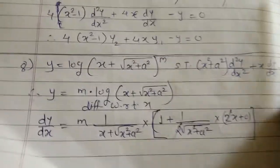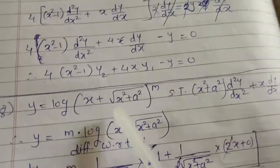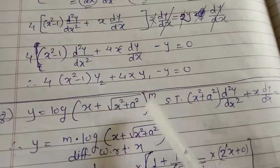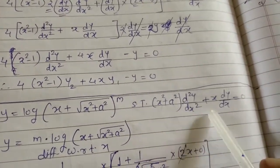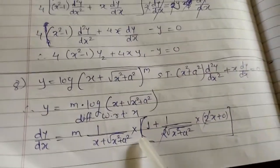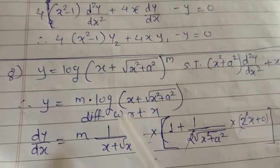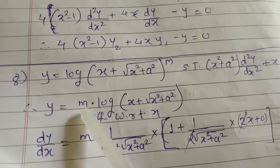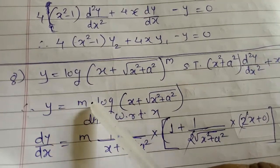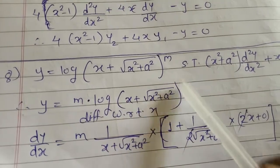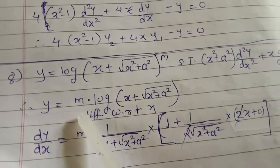Now for example number 8, question number 3: y = [log(x + √(x²+a²))]^m. Show that (x²+a²)·d²y/dx² + x·dy/dx = 0. Since these are somewhat lengthy examples, follow carefully. First, bring the power m in front of the log: y = m·log(x + √(x²+a²)).